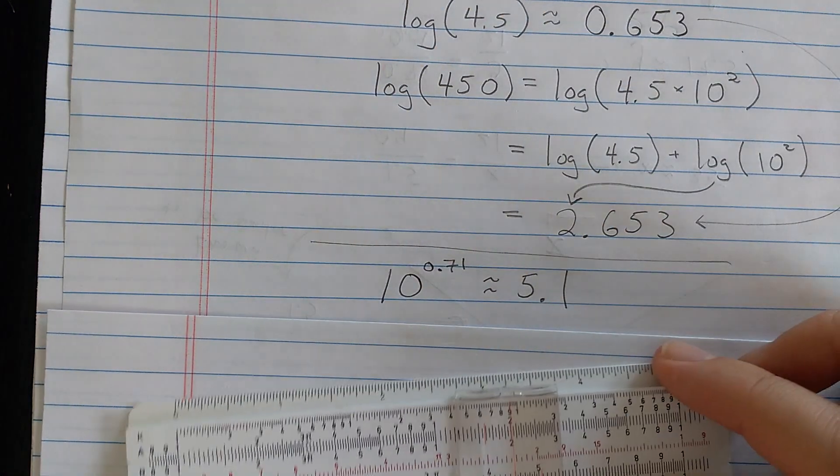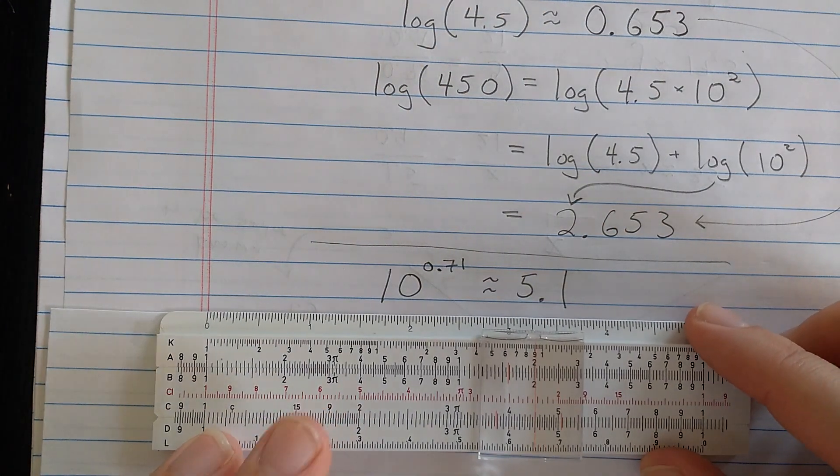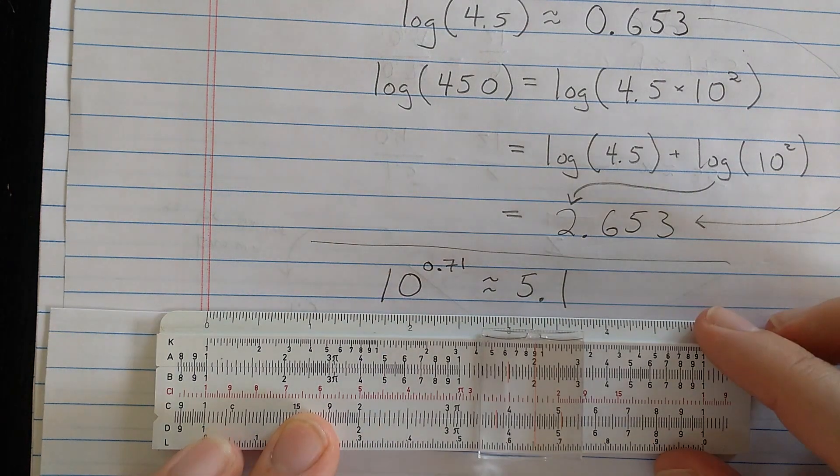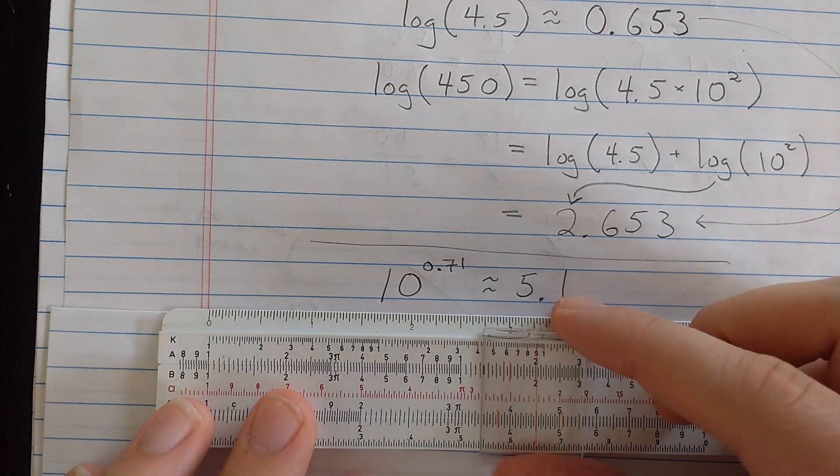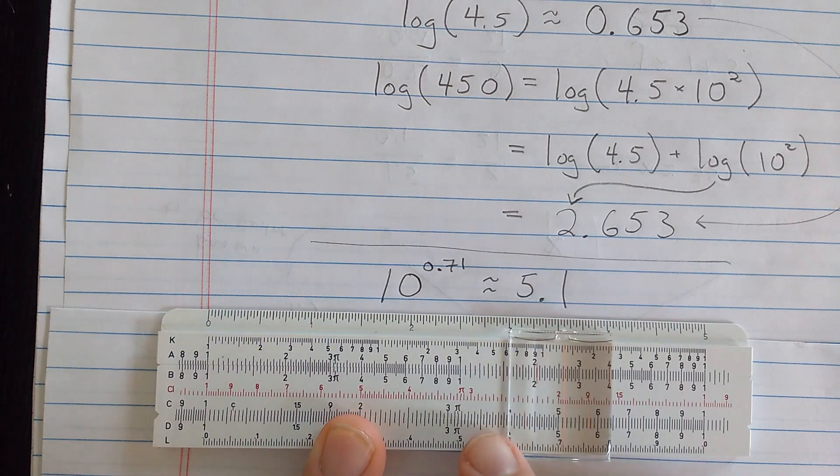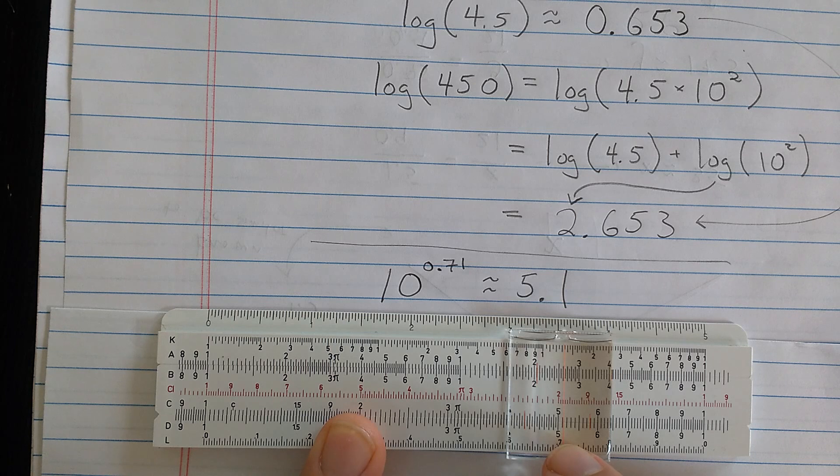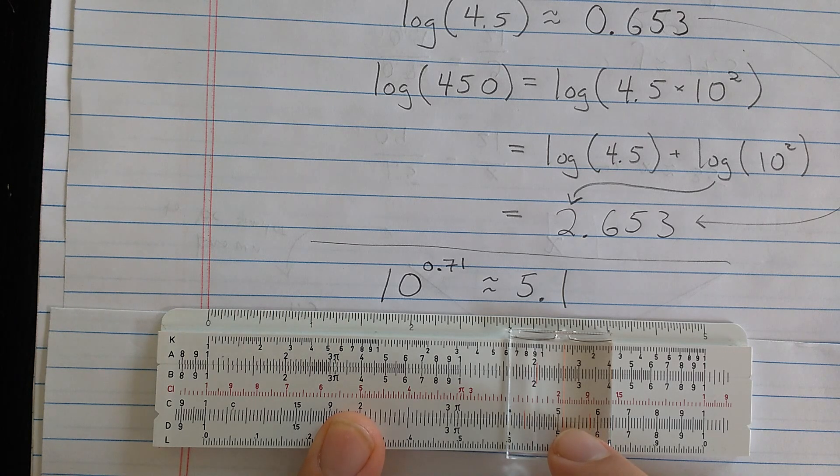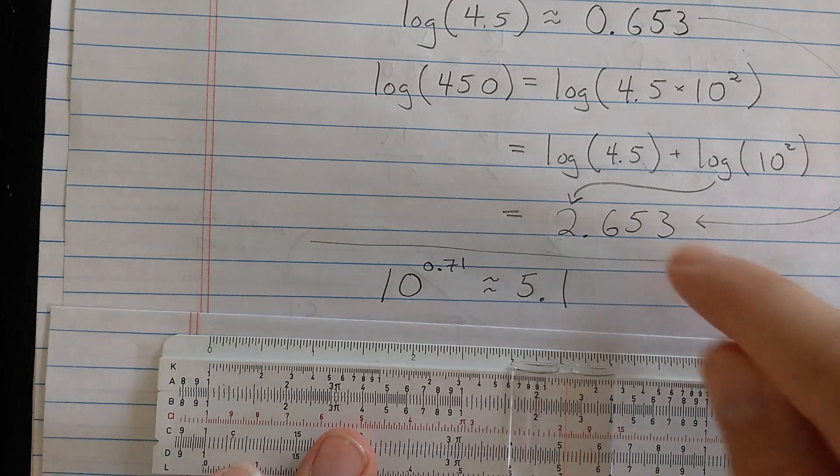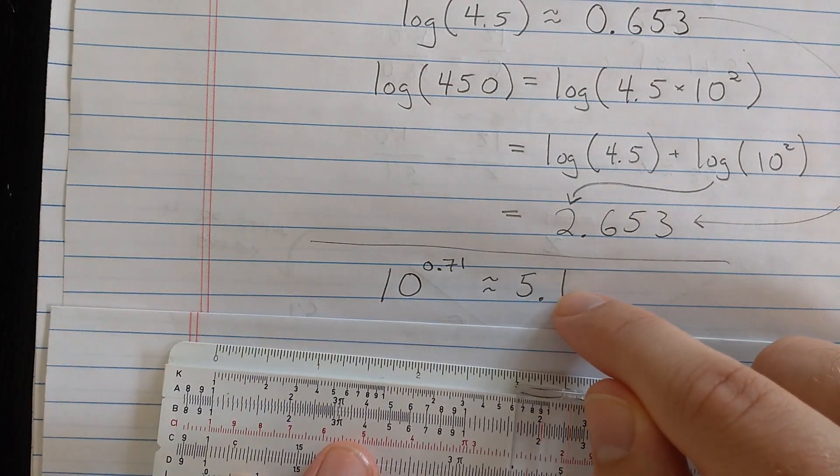Now, if you use this process in reverse, you compute exponential function with base 10. So if I use this in reverse, that means finding 0.71 on the L scale first and then reading results on the D scale, 5.1. So doing this in reverse computes exponents with base 10. And you can turn something like this back into the number.